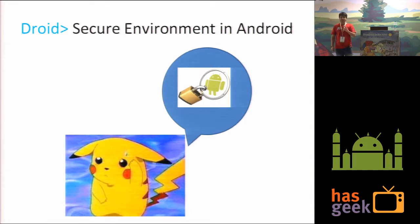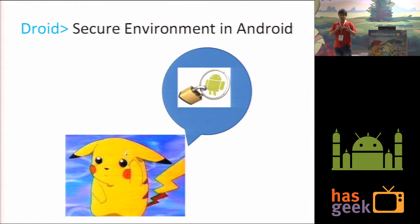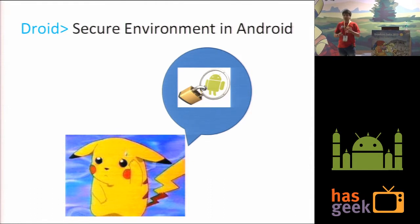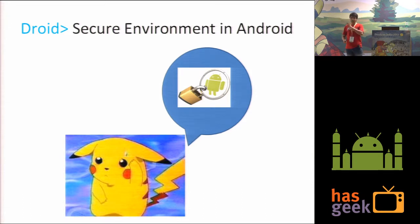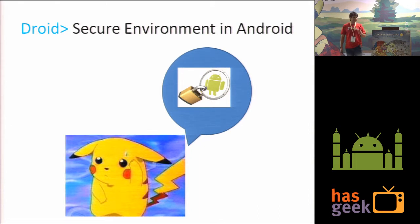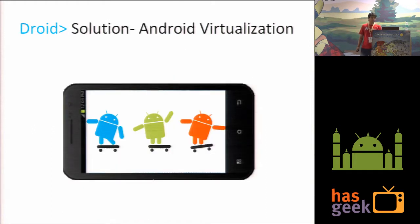When you are using your mobile, it has everything — your mobile knows who you are contacting, what you are doing, your trips, where you are travelling, what applications you use, what stuff you like, and everything. When it comes to employee companies, the company information is also there on the mobile. We can lose our mobile or share it with others, and the enterprise doesn't want that. So what we need is a solution to isolate personal and work environments.